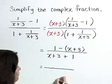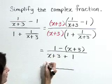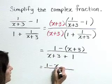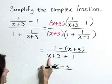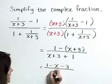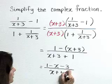Now let's simplify what we have left. In the numerator, 1 minus x minus 3, distributing. And in the denominator, let's combine our like terms and write this as x plus 4.